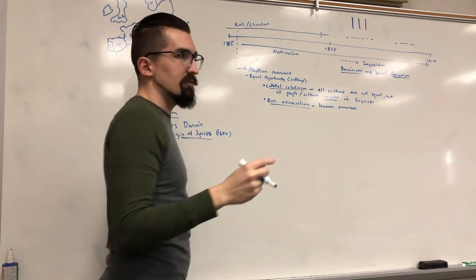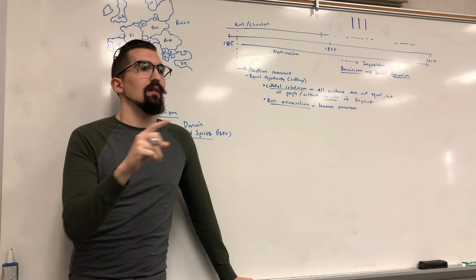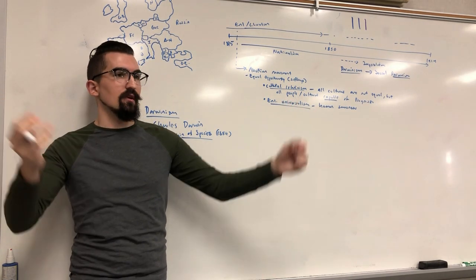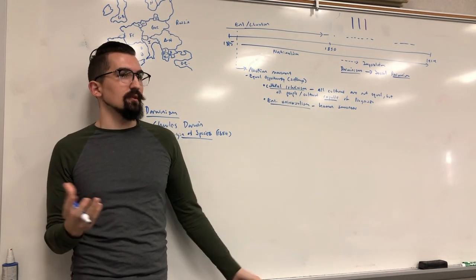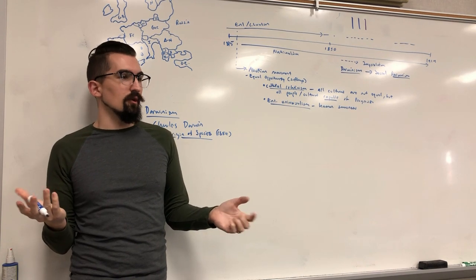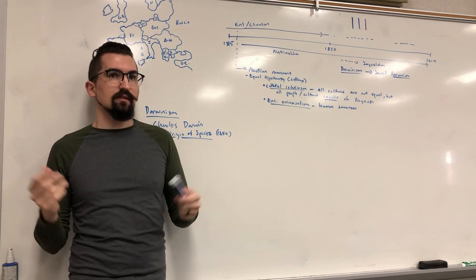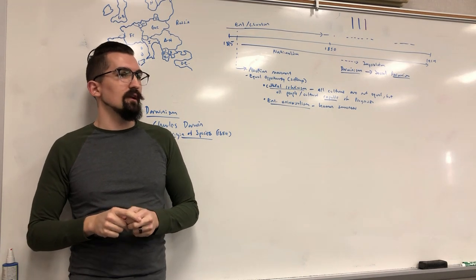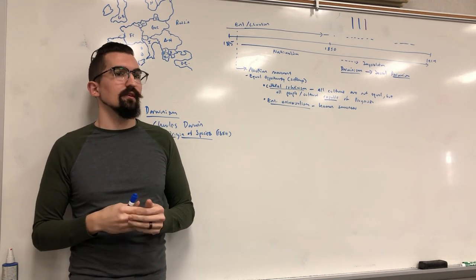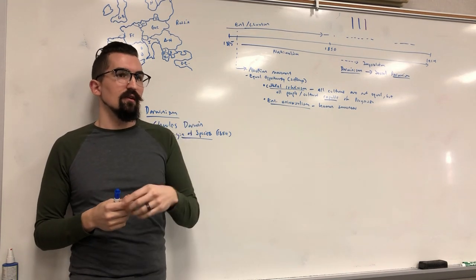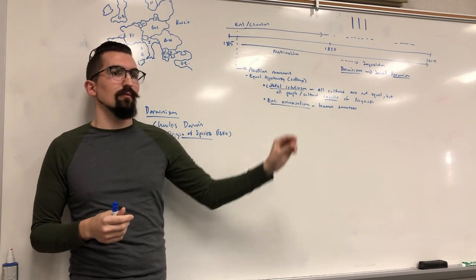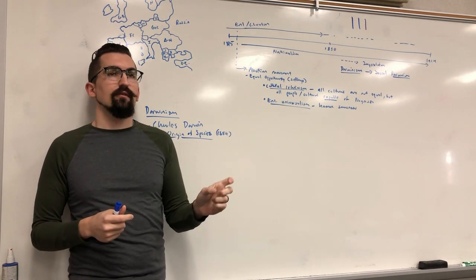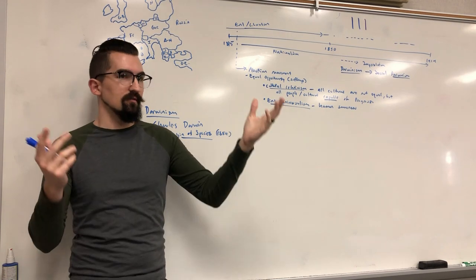It offers a natural biological explanation for the world and why it's so varied — there are thousands of different species. Before Darwin, people thought God created them as they were. But several things are going to break that view, at least scientifically. Darwinism provides a natural and biological explanation for existence as well as variety.